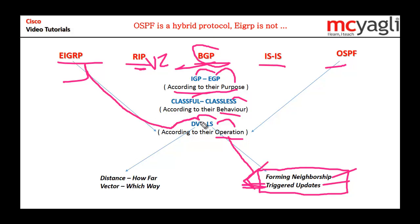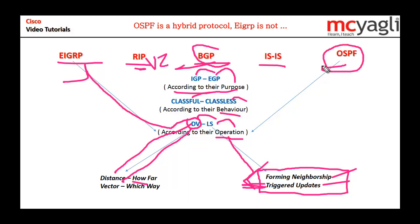So these properties do not exclusively belong to link state. EIGRP is a distance vector protocol. 'Distance' means how far, and 'vector' means which way. EIGRP doesn't have the complete map of the topology — it doesn't even know what is behind its neighbors. What about OSPF? Is it a hybrid protocol? Yes it is, and I'll tell you why.